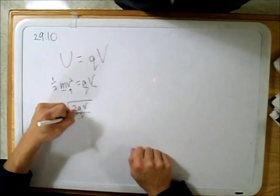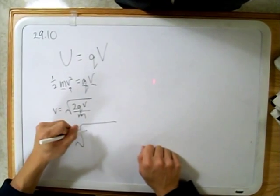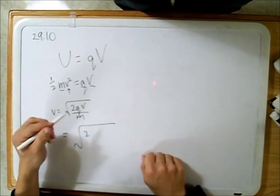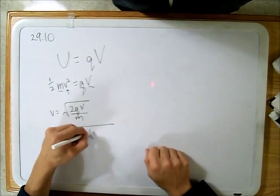We just plug in our values, so 2 times the charge of an electron, which is 1.6 times 10 to the negative 19.